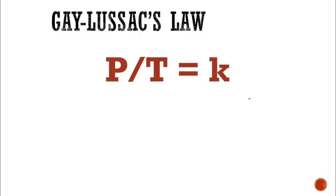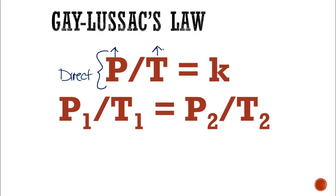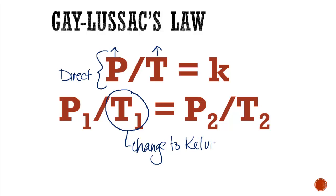The last law we are looking at tonight is Gay-Lussac's Law. Gay-Lussac's Law looks at the relationship between pressure and temperature. We have now looked at three measurable quantities: pressure, temperature, and volume — we will get to the fourth in our next video. Pressure and temperature, similar to volume and temperature, are divided, so they have a direct relationship: as one goes up, the other does too. The equation looks very similar to Charles' Law. Remember, temperature must be converted to Kelvin — these equations will not work in degrees Celsius.